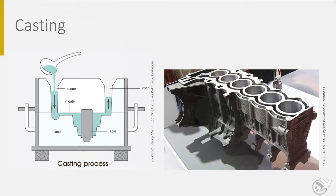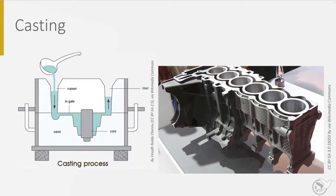In this figure, the die is made of sand and can be used for only one casting. For every new casting, a new sand die has to be made. Other casting processes may have permanent dies and more complex geometries. An example of a much more complex casting is the motor block on the right-hand side. After pouring the metal in the die, the metal has to cool down so the part can be retrieved from the die. Note that shrinkage of the part should be compensated in the die design.